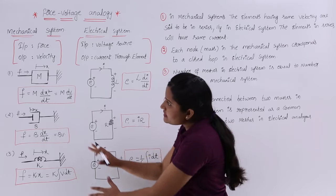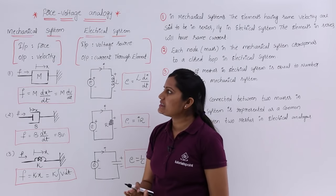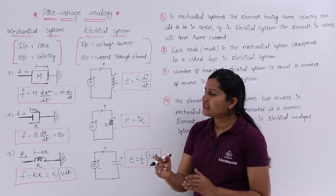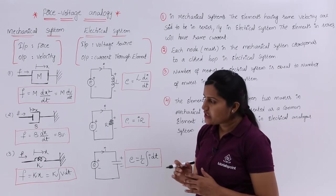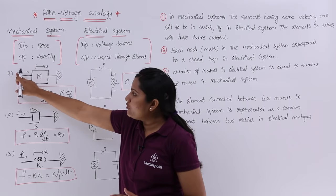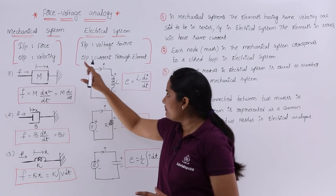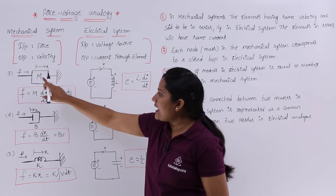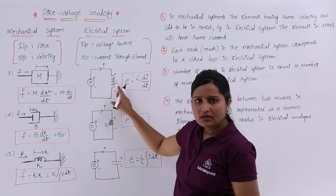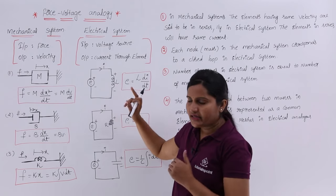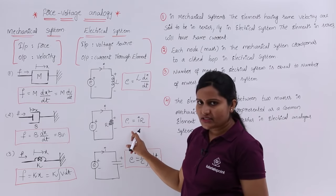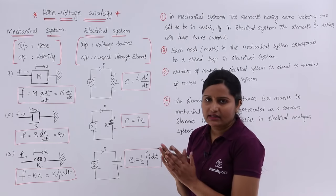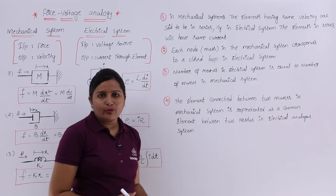By this table, keep in mind: in the mechanical system, force and velocity are the input and output; in the electrical system, voltage and current are the input and output. Force is modeled as input voltage source E, mass is considered as inductance L, dashpot is considered as resistance R, and spring is considered as capacitance C in the electrical system.